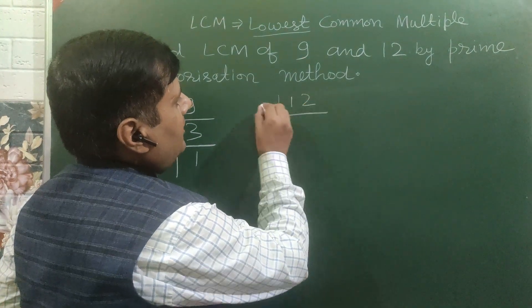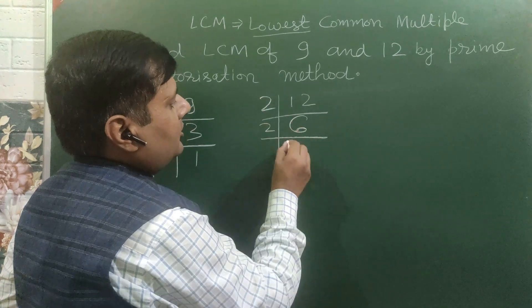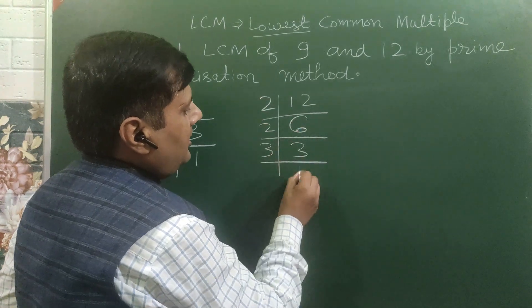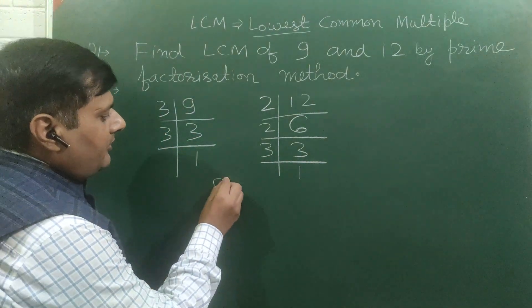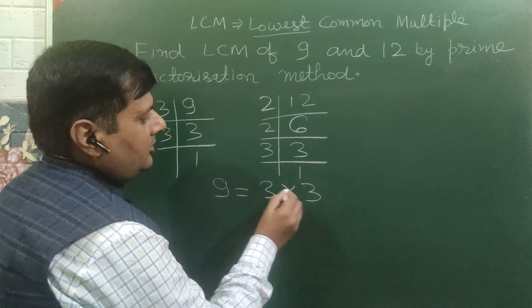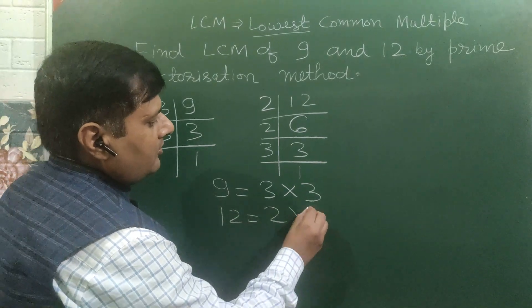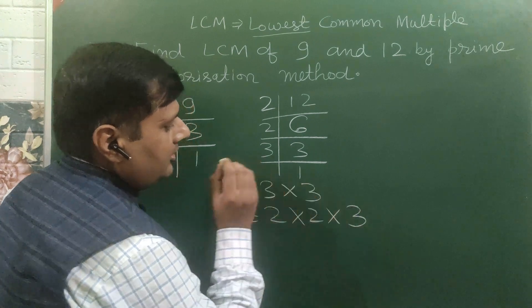Again 12, it is divisible by 2: 2 sixes are 12, 2 threes are 6, 3 ones are 3. We will write 9 as 3 into 3, 12 as 2 into 2 into 3.